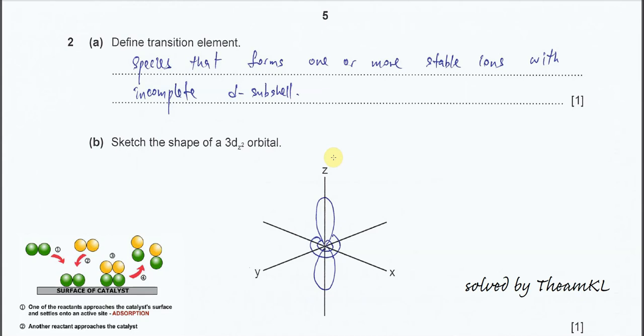Question 2a: Define transition elements. This question is very easy. You need to mention two things here. Species that form one or more stable ions with incomplete d subshell. I give you one example, iron 2+ and iron 3+.